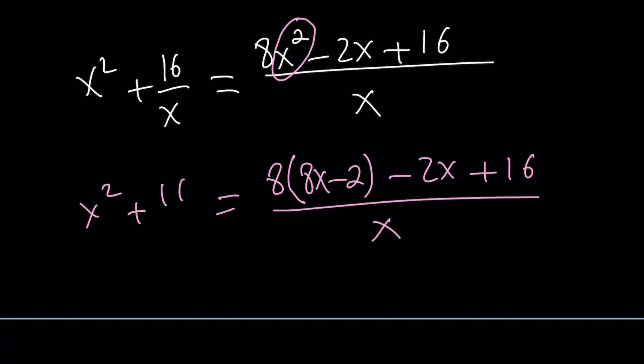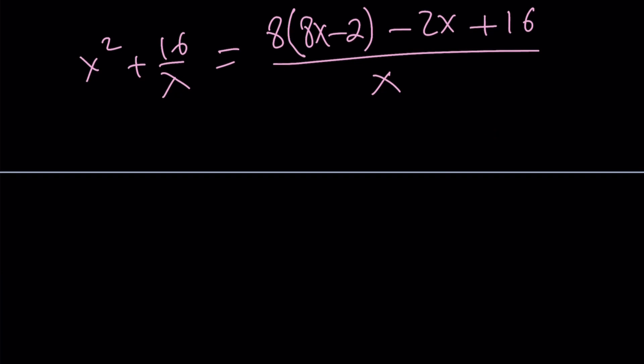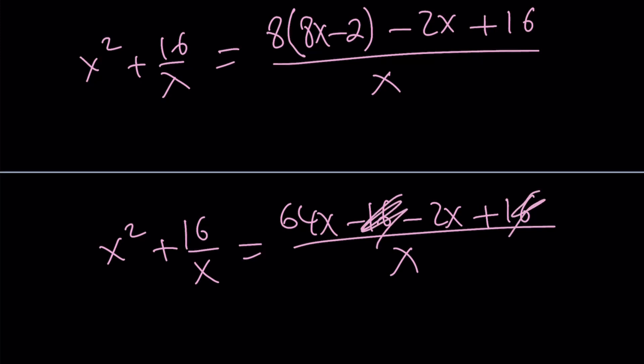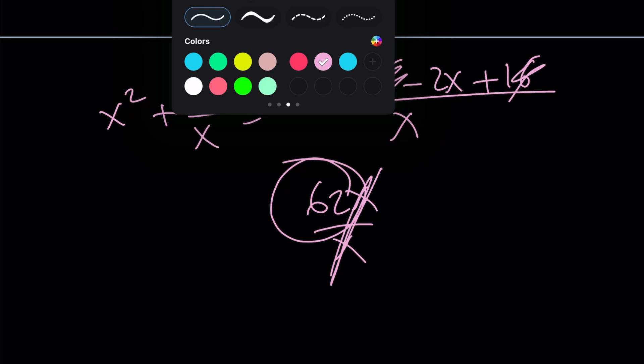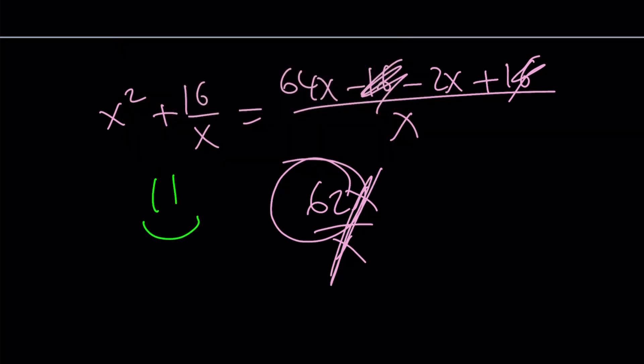Let's go ahead and simplify this now and find the answer. Well, I'm going to distribute: 64x minus 16 minus 2x plus 16 divided by x. 16 cancels out. 64x minus 2x is 62x. If you cancel out the x because we know x does not equal 0, we end up with the same answer, 62 as our numerical value. And this brings us to the end of this video.